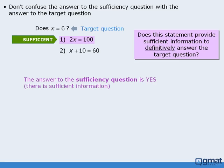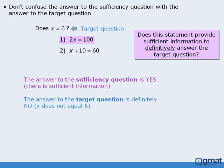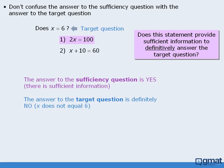Here's the mistake that some students make. They look at statement 1 and see that x must equal 50. The target question asks: does x equal 6? So the answer to the target question is no — x does not equal 6. At this point some students take the answer of no and apply it to the sufficiency question, which asks: does this statement provide sufficient information to answer the target question? If they conclude no, the statement does not provide sufficient information, then they will erroneously conclude that statement 1 is not sufficient. Remember: your goal is to determine whether each statement is sufficient to answer the target question. Do not confuse the answer to the sufficiency question with the answer to the target question.